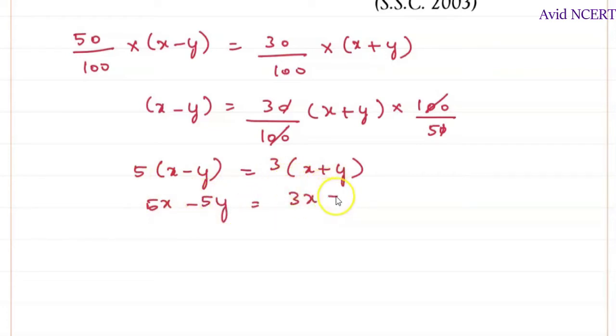Which is 5 times x is 5x minus 5 times y is 5y equals 3 times x is 3x plus 3 times y is 3y. So grouping x together, which is 5x and 3x comes this side becomes minus 3x equals 3y.